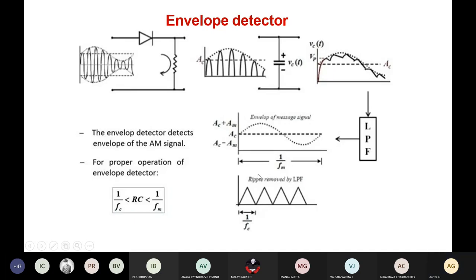The envelope frequency equals the frequency of the message signal, which is 1/fm — this is the time period. The ripple corresponds to the carrier frequency, with time period 1/fc. When choosing the values of resistance and capacitance for the charging network, the time constant RC should lie between 1/fc and 1/fm: it must be greater than 1/fc and less than 1/fm.